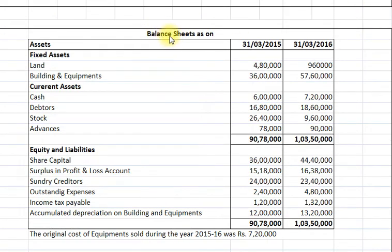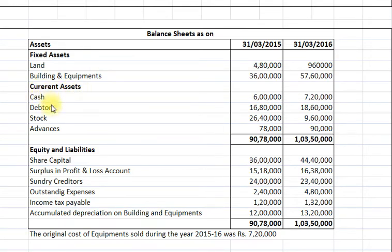Here is the balance sheet of A Limited as on 31st March 2015 and 31st March 2016. On the asset side we have fixed assets: Land Rs. 4,80,000 and Rs. 9,60,000. Buildings and equipment Rs. 36 lakhs and Rs. 57,60,000. Current assets: Cash Rs. 6 lakhs and Rs. 7,20,000. Debtors Rs. 16,80,000 and Rs. 18,60,000. Stock Rs. 26,40,000 and Rs. 9,60,000. Advances Rs. 78,000 and Rs. 90,000.